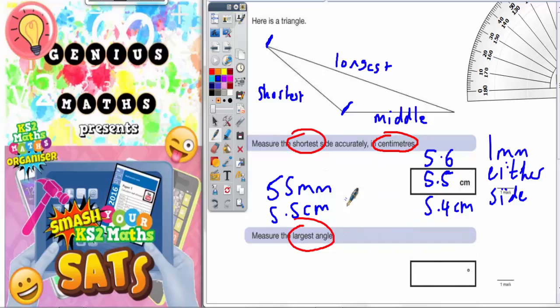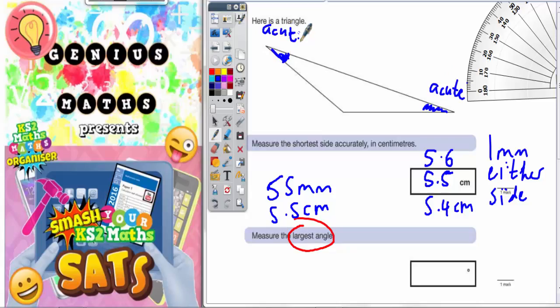The second question asks you to measure the largest angle. Now in terms of the angles, if we just clear space here, the largest angle—well, you can see that this angle and this angle are both acute, which is less than 90 degrees.